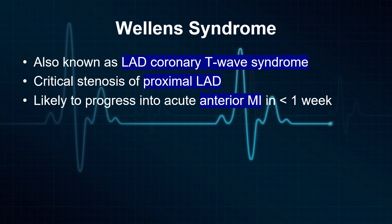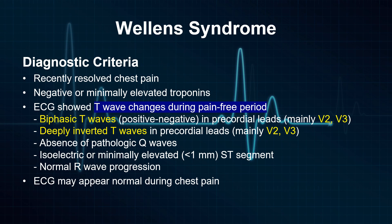Diagnostic criteria of Wellens syndrome include a recent chest pain that has resolved, negative or minimally elevated troponins, and an abnormal ECG pattern which includes biphasic or deeply inverted symmetric T-waves in precordial leads, mainly in V2 and V3, absence of pathologic Q-waves, isoelectric or minimally elevated ST-segment, and normal R-wave progression.